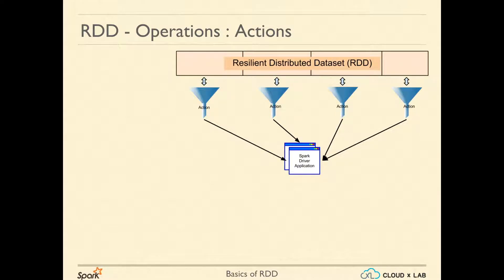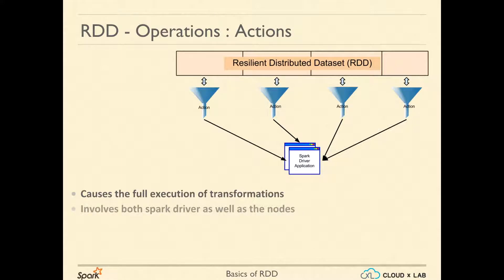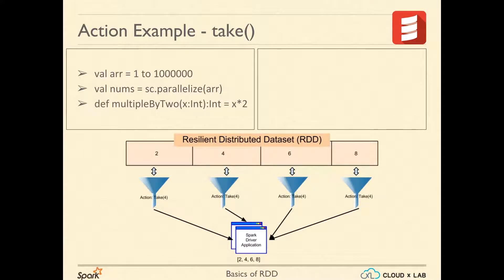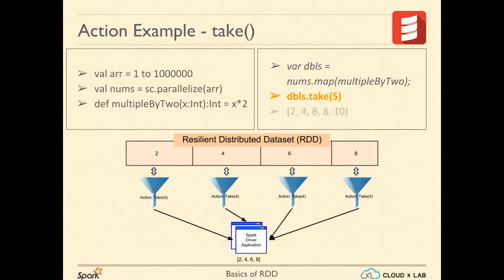The other kind of RDD operations are called actions. An action causes the full execution of transformations and involves both the Spark driver and the nodes. We have already used an action called take in our previous examples to bring back a few records to the driver.